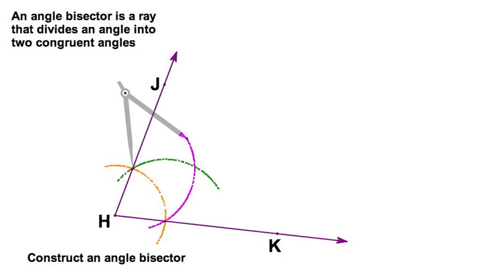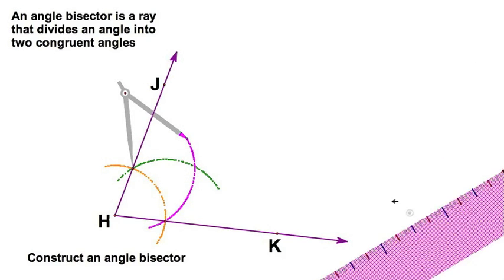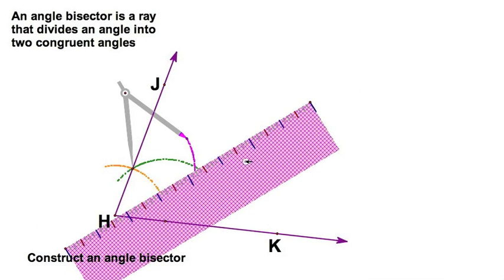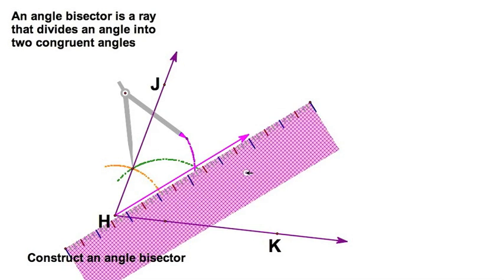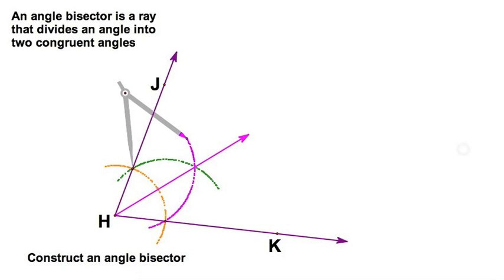I'll leave that compass there and grab my straight edge. I'm just going to line my straight edge up. I don't really need those marks — I'm not measuring, I'm just using a straight edge. I draw my bisector, and there it is. I'll put in my little tick marks, and there you go.